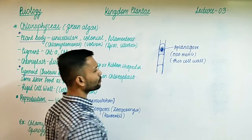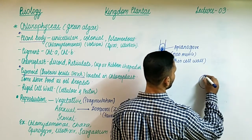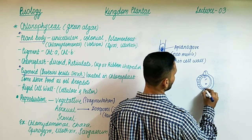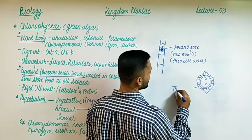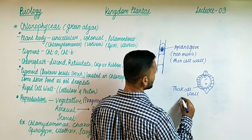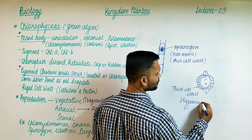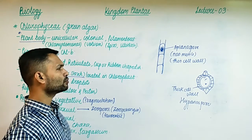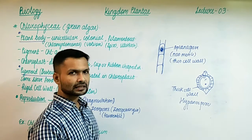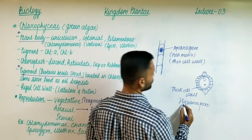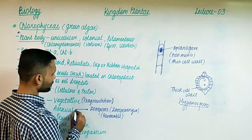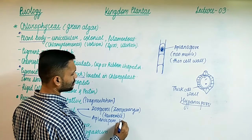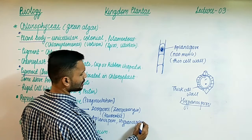Similarly, if a spore has a thick cell wall formed around it, it is known as a hypnospore. There is not much difference between aplanospores and hypnospores - both are non-motile; the difference is just the thickness of the cell wall. These are produced to bear unfavorable conditions such as scarcity of water. Note that aplanospores and hypnospores are not mentioned in NCERT.